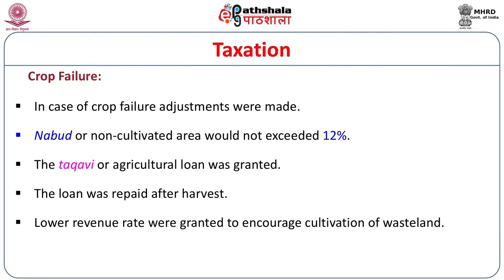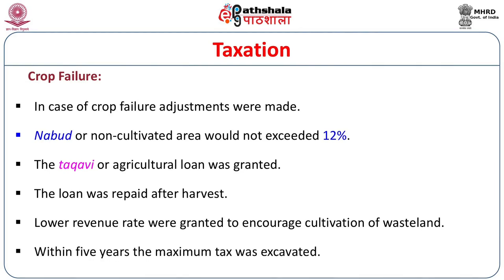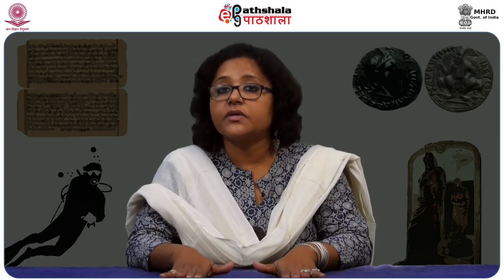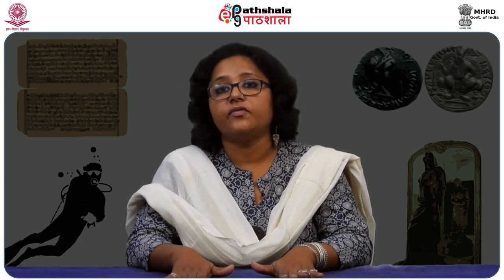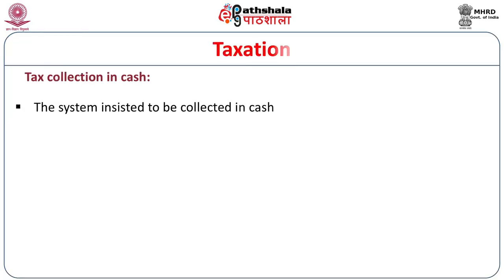A lower revenue rate was granted to encourage cultivation of wasteland. Within five years, the maximum tax was extracted. Tax was essentially collected in the form of cash because that was convenient for the tax collectors to handle. The system insisted on collection in cash.